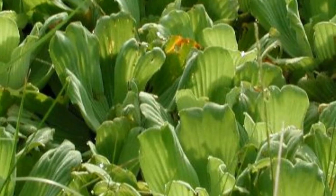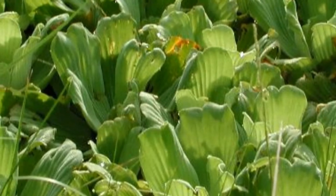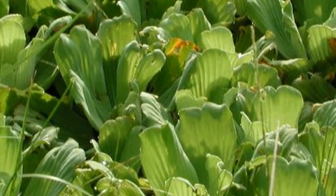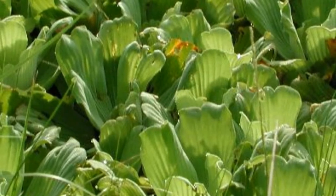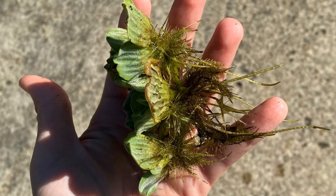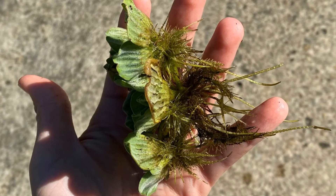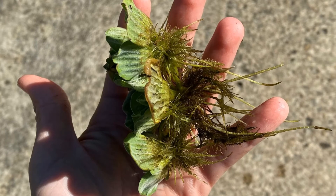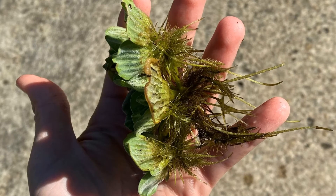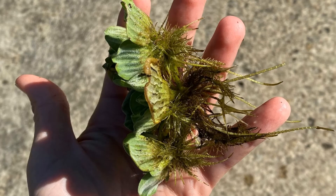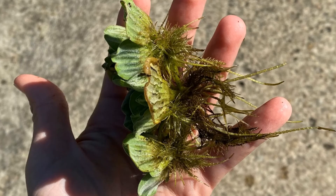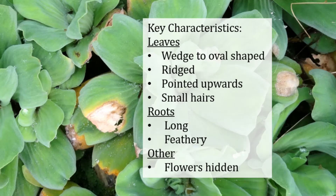Water lettuce is a floating plant that gets its name from its close resemblance to lettuce and use as a culinary vegetable in Asian cuisine. Water lettuce has wedge to oval shaped leaves that are thick, ridged, and pointed upwards with small hairs. Other key characteristics include long feathery roots and hidden flowers.